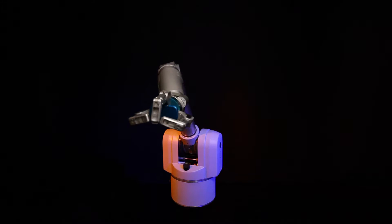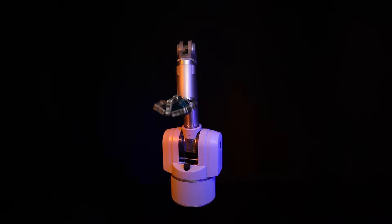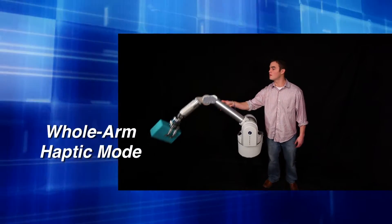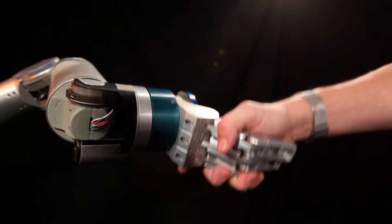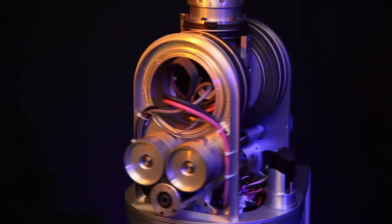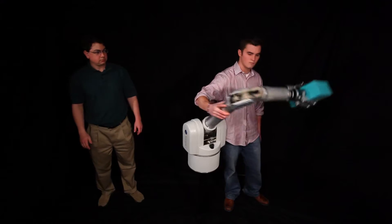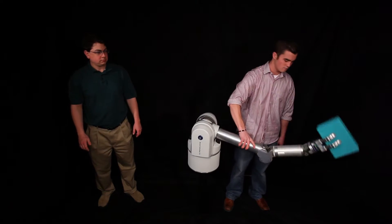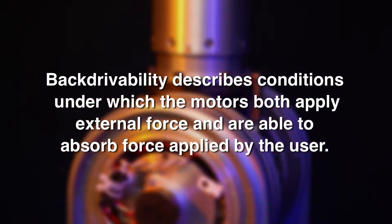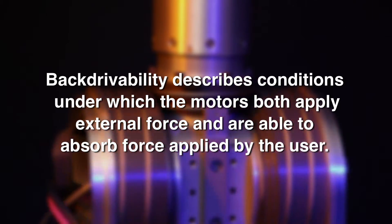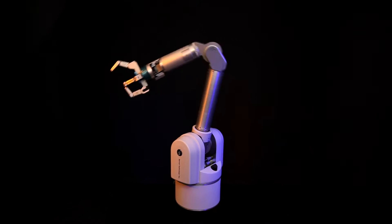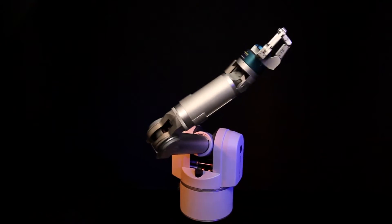These applications are all made practical by the unique characteristics of the WAM arm. Whole arm haptic mode allows the user to move the weightless arm directly with a feather touch — not just the end tip of the arm, but the whole arm. Enabled by near frictionless cable drives, the WAM arm is the first to be designed from the ground up to be highly back drivable. Back drivability describes conditions under which the motors both apply external force and are able to absorb force applied by the user. That is what enables its haptic qualities and direct joint torque capability.